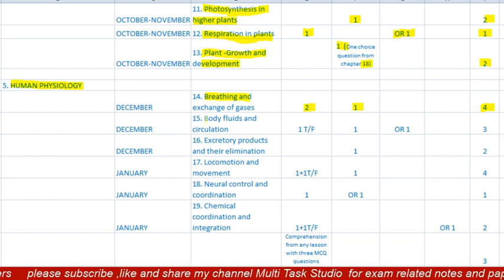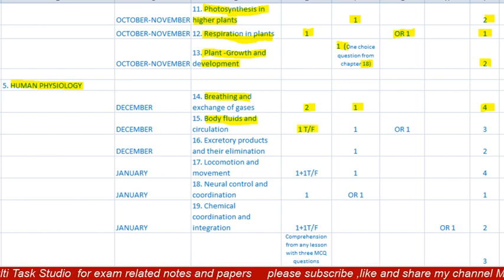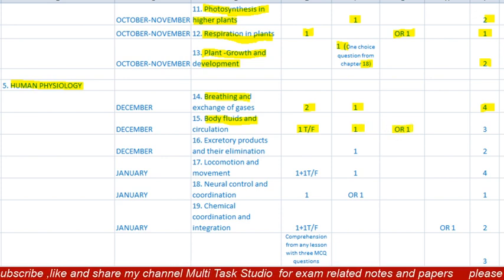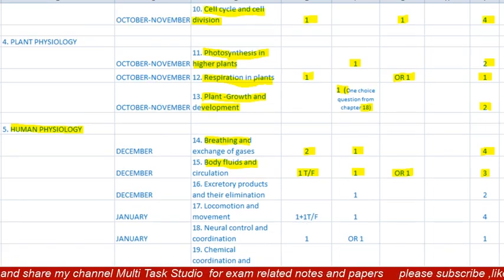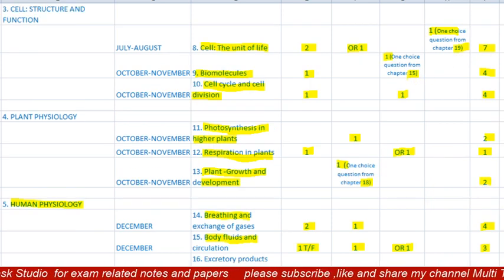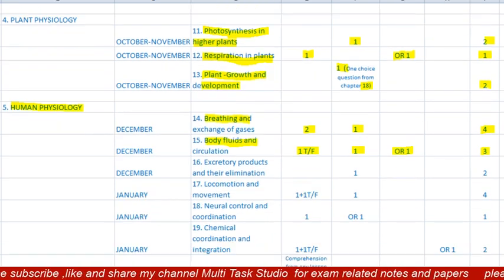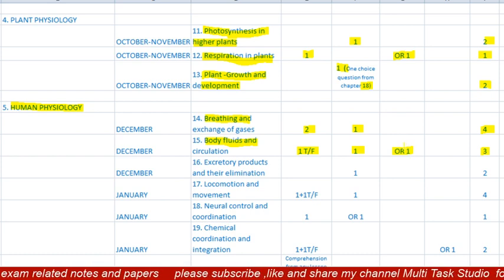Lesson 15 is 'Body Fluids and Circulation,' to be completed in December. There will be one true/false of one mark and one question of two marks. For the three-marks question, there is a choice: one question from lesson 9 and one from lesson 15. Total paper will be three marks.